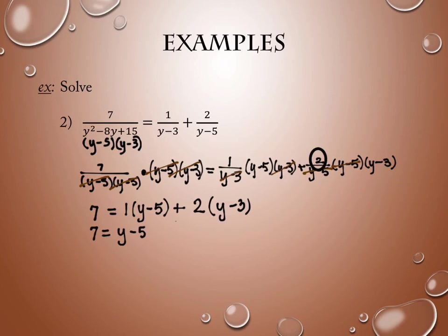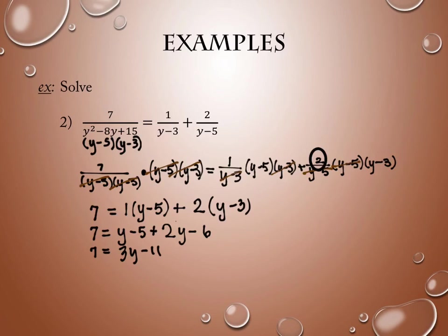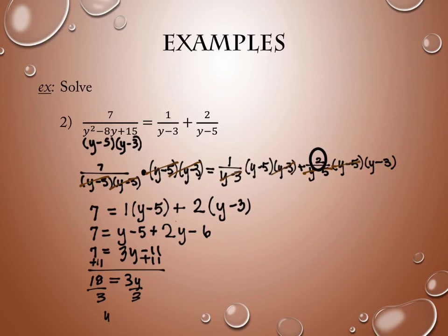So there's (y minus 5) plus 2(y minus 3), simplified on the right-hand side to 3y minus 11. Then we add 11 to both sides, giving 3y equals 18, divide by 3, and y equals 6. Now on this one the answer is 6, but on every problem you do, you need to make sure that the answer you get does not make the original denominators equal to zero.